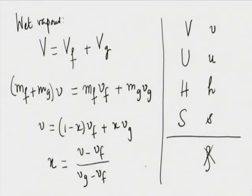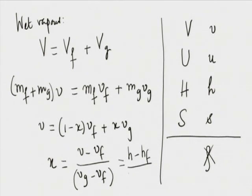Similarly, x equals (U minus Uf)/(Ug minus Uf) and x equals (H minus Hf)/(Hg minus Hf). The quantity Hg minus Hf appears frequently and that is one reason it is tabulated. Later, when working with open systems, turbines, and compressors, H and S are the important properties — that is why Hfg and Sfg are also tabulated.